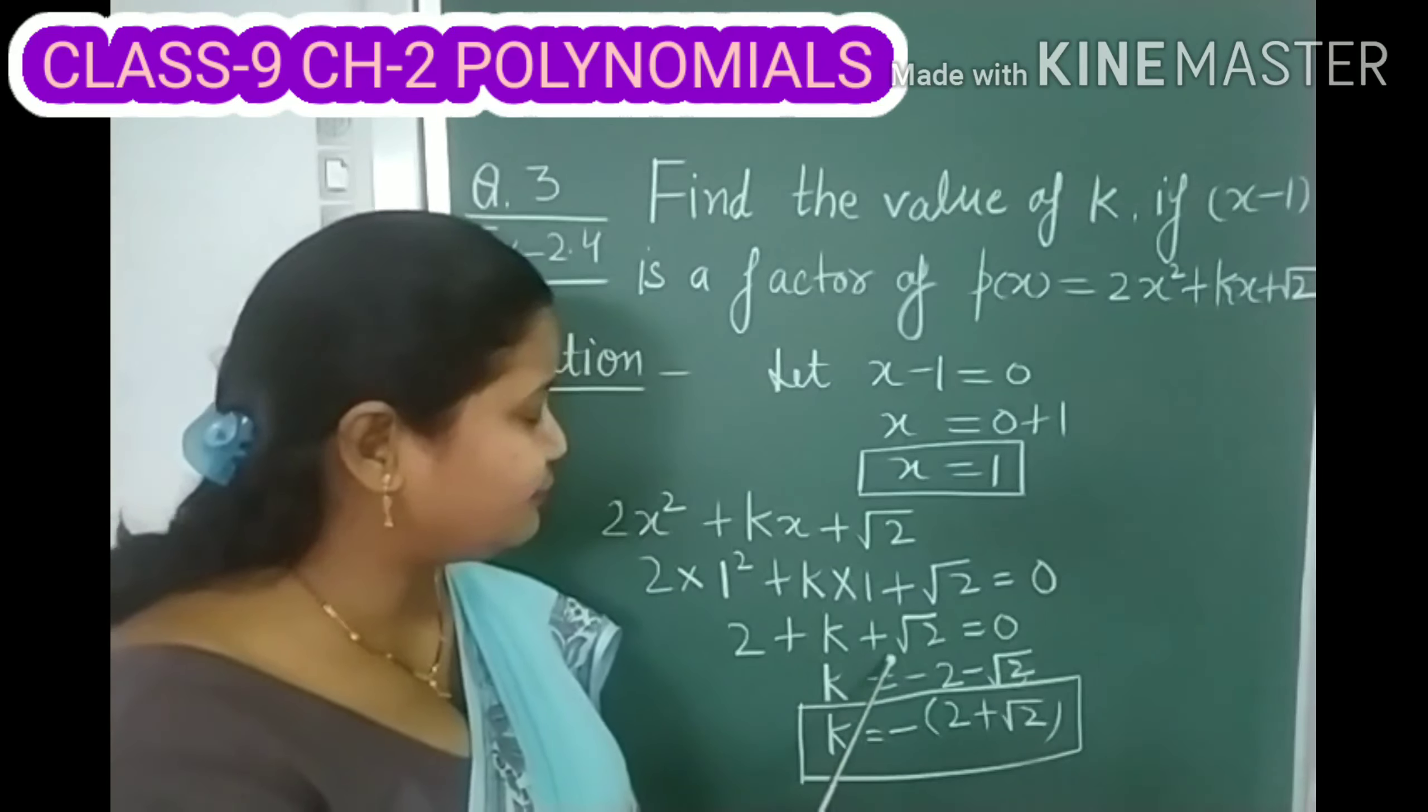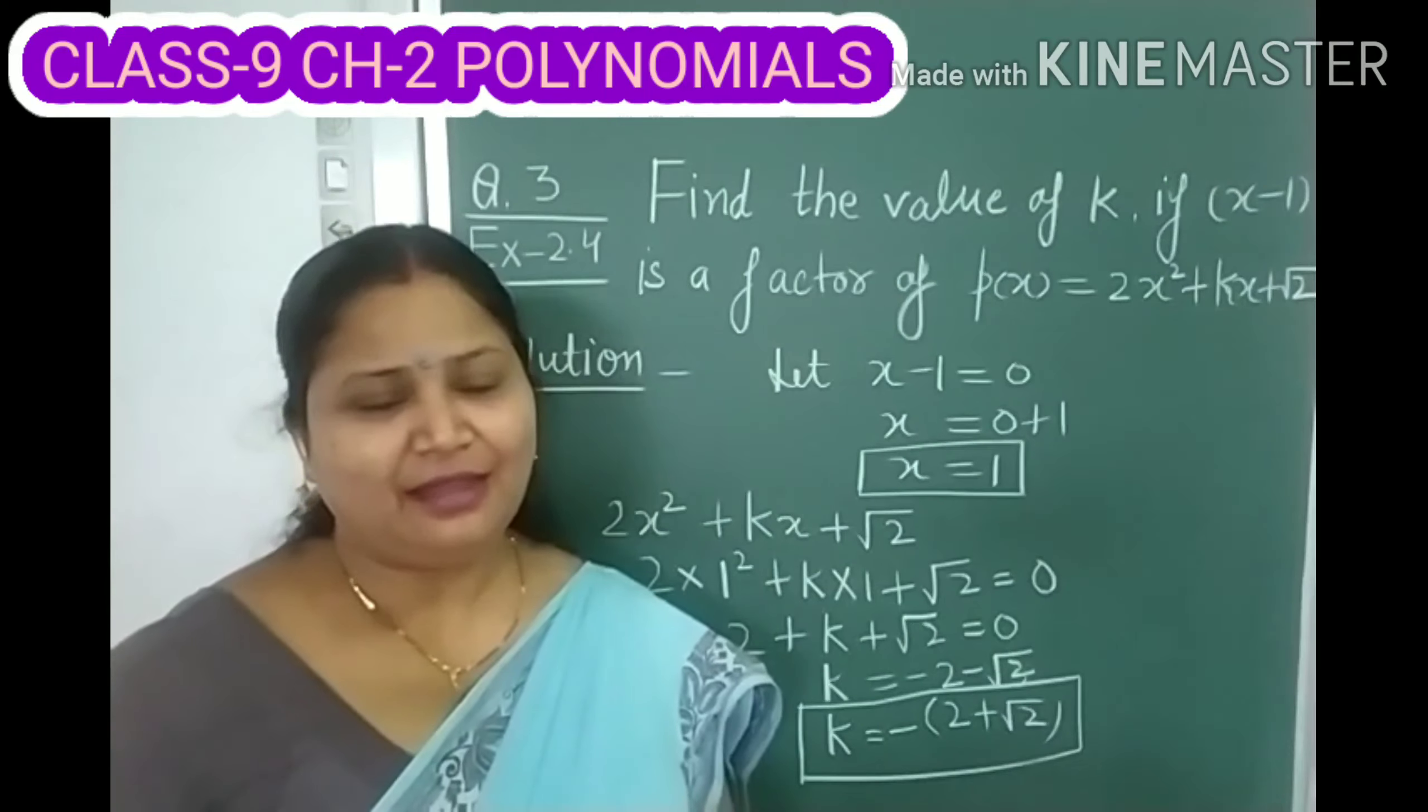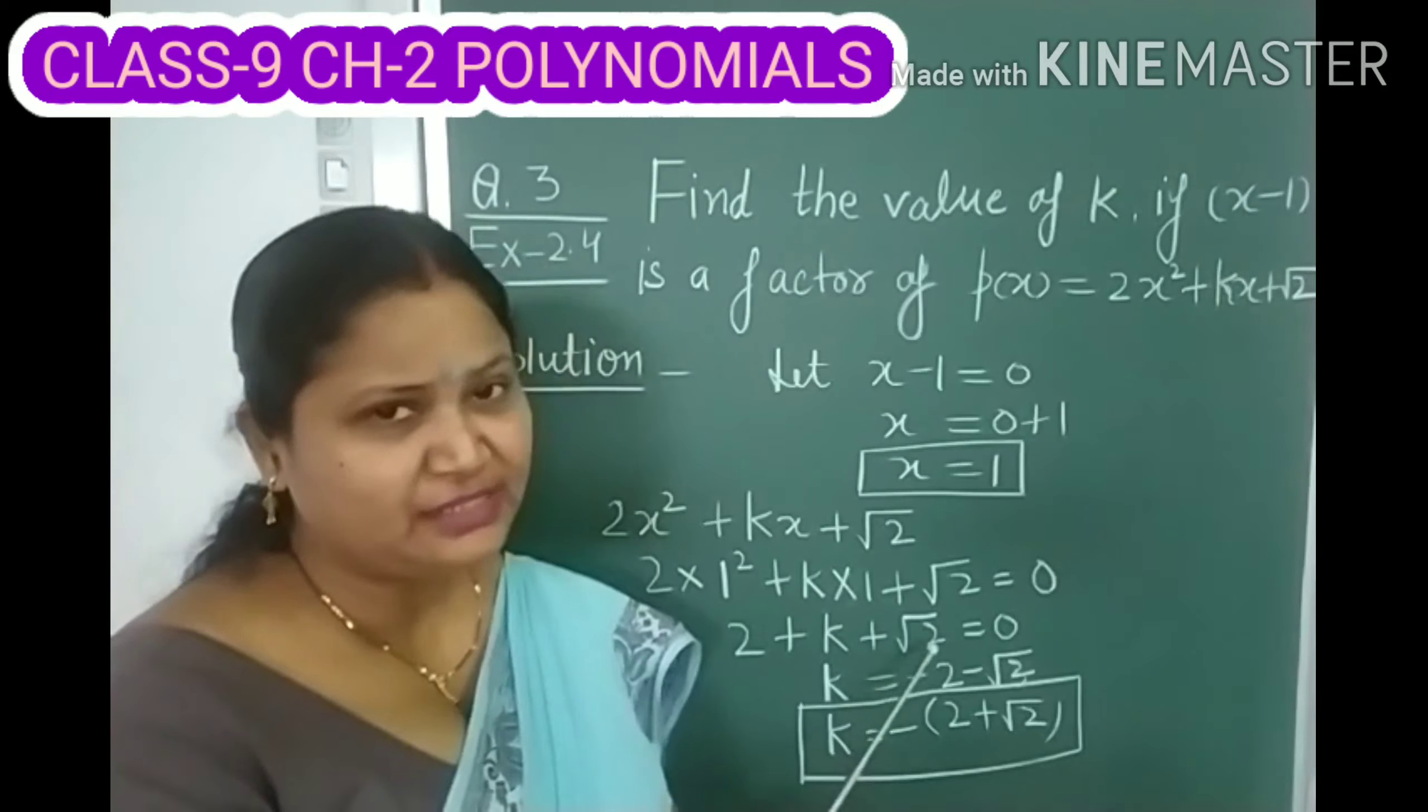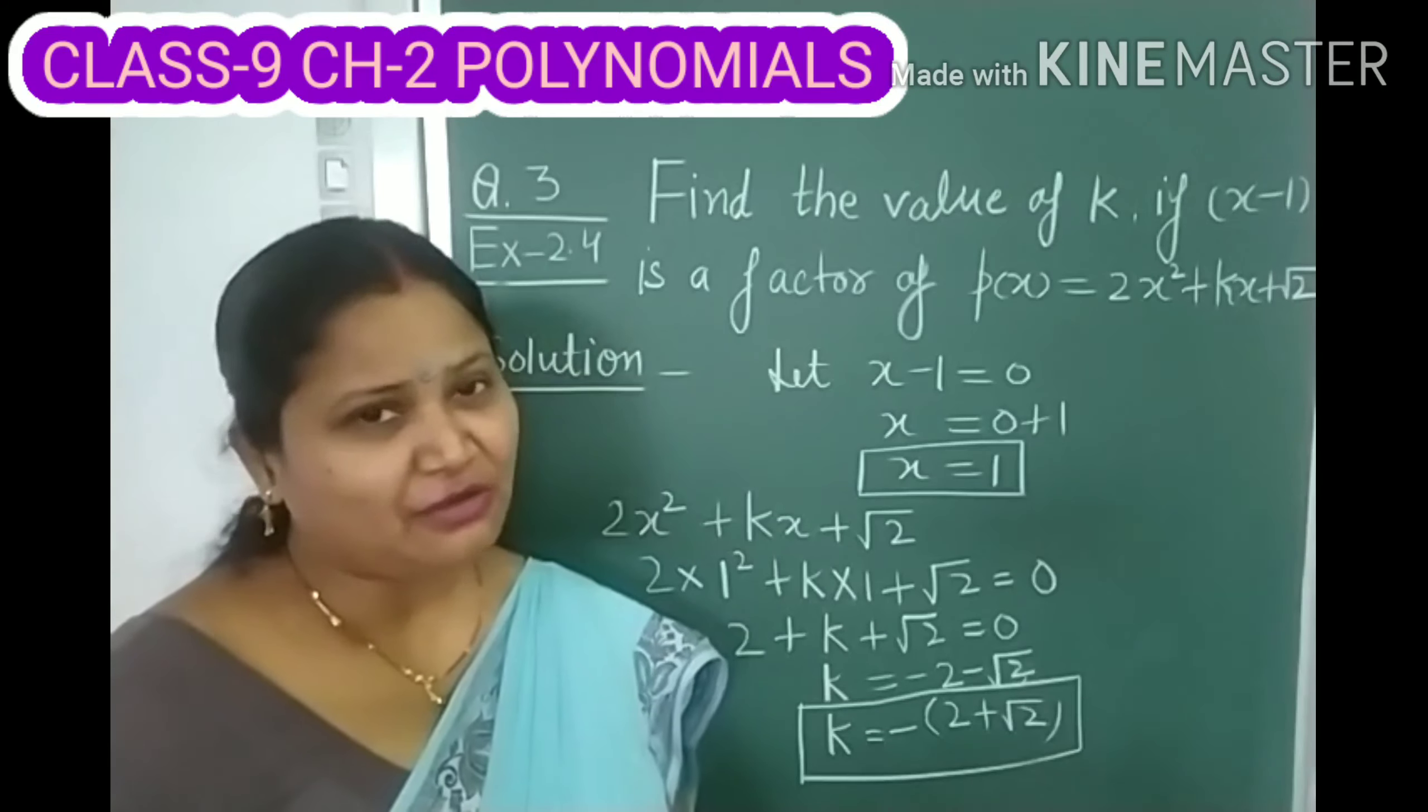Now children, we can't solve this 2 and root 2 because they are not like terms. As you know, this 2 is rational and this root 2 is irrational. So we can't solve them.